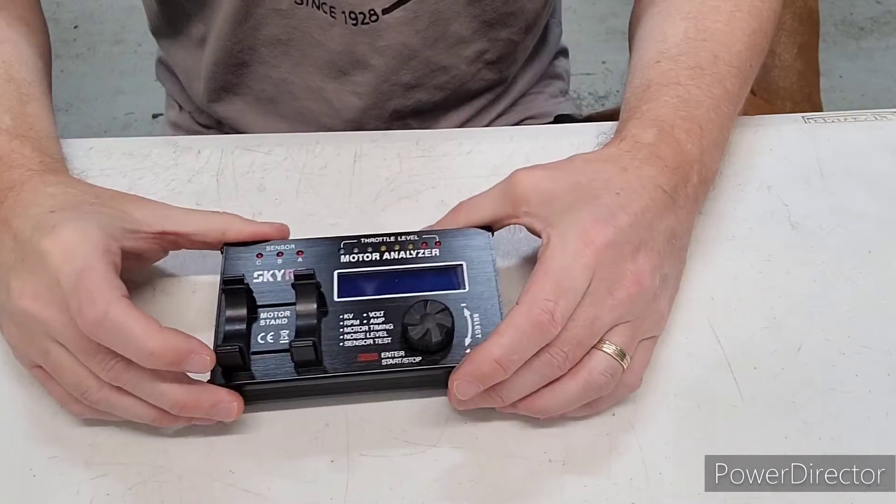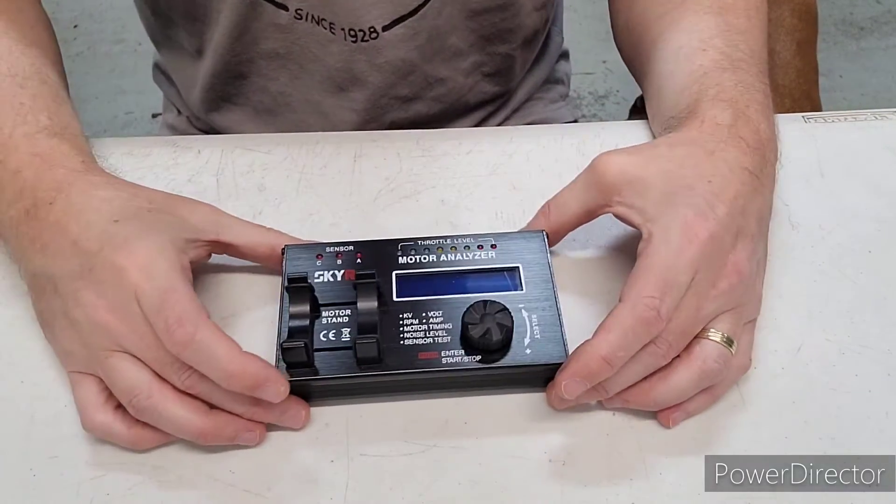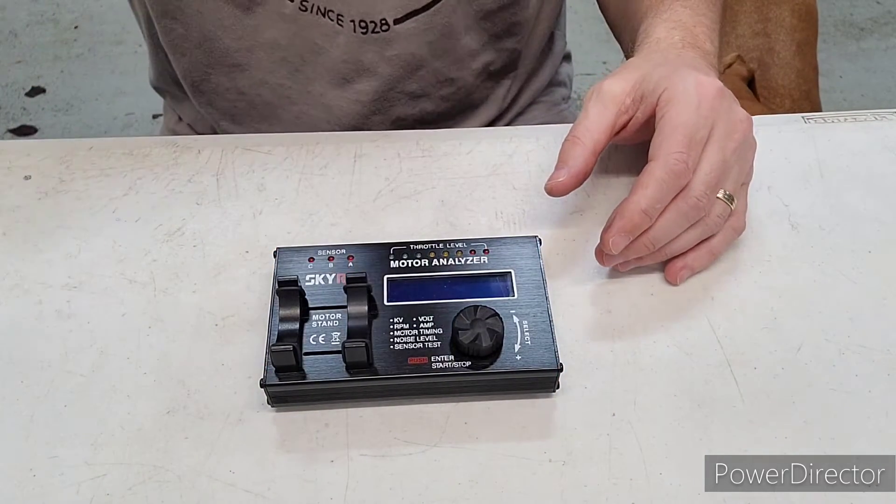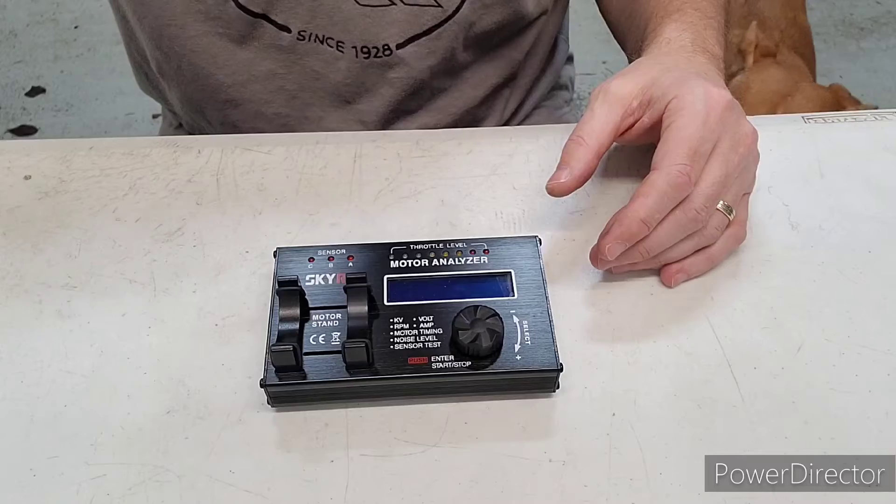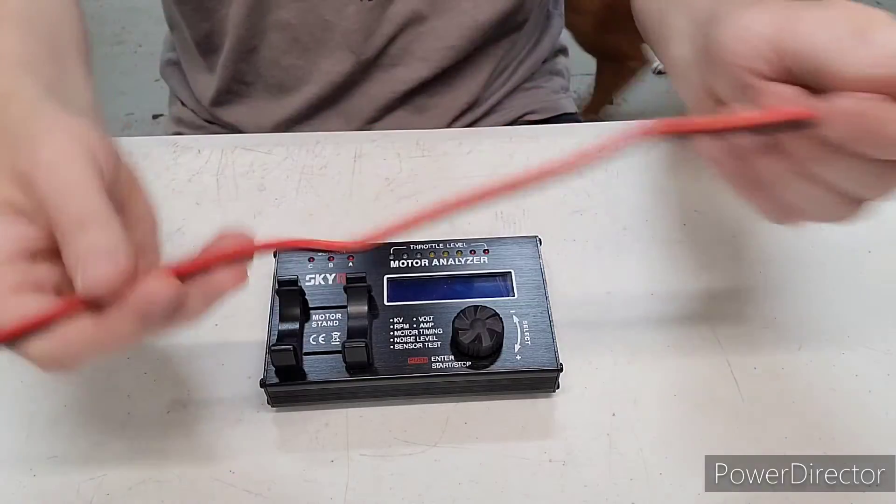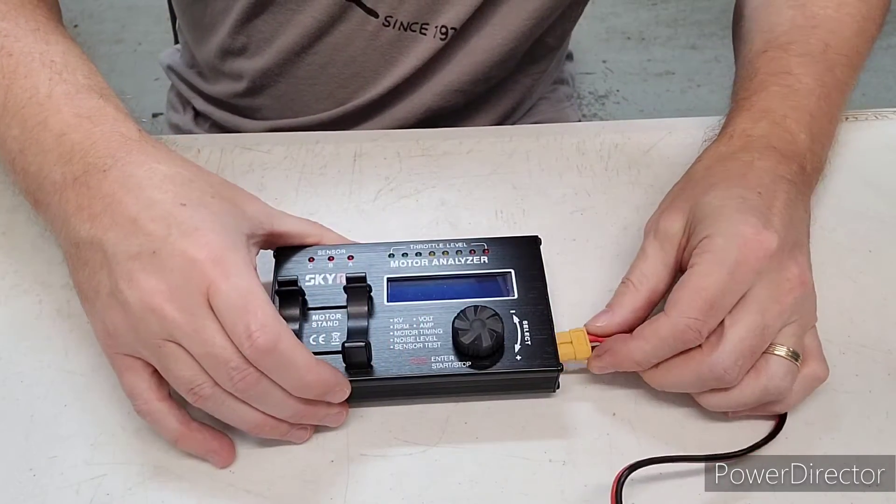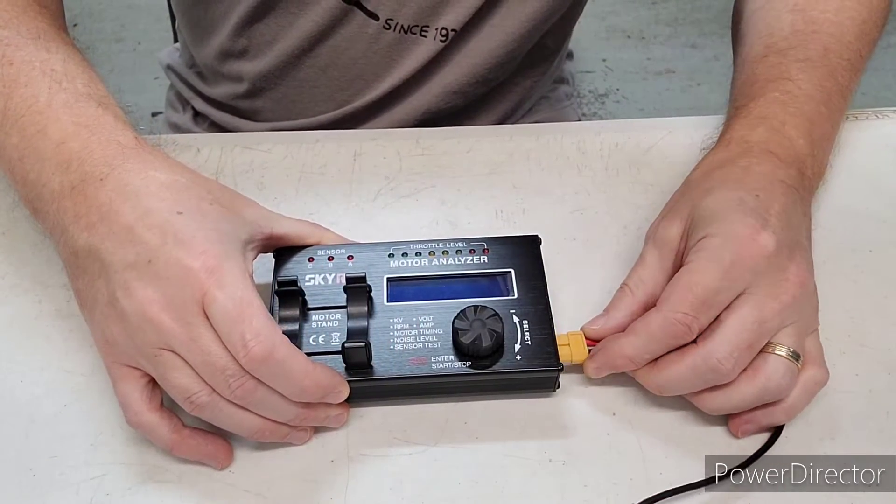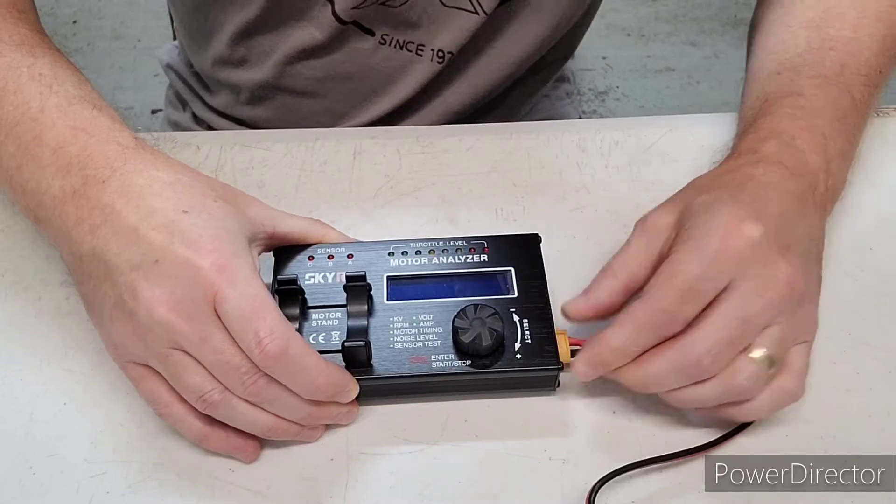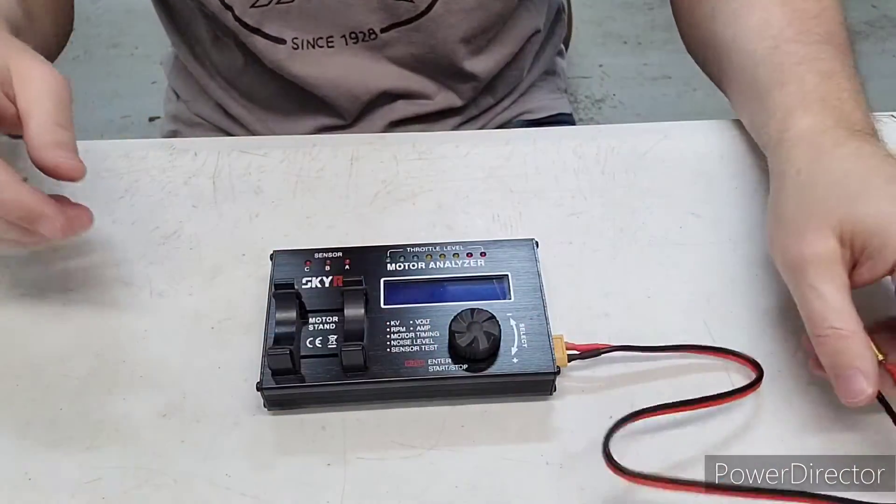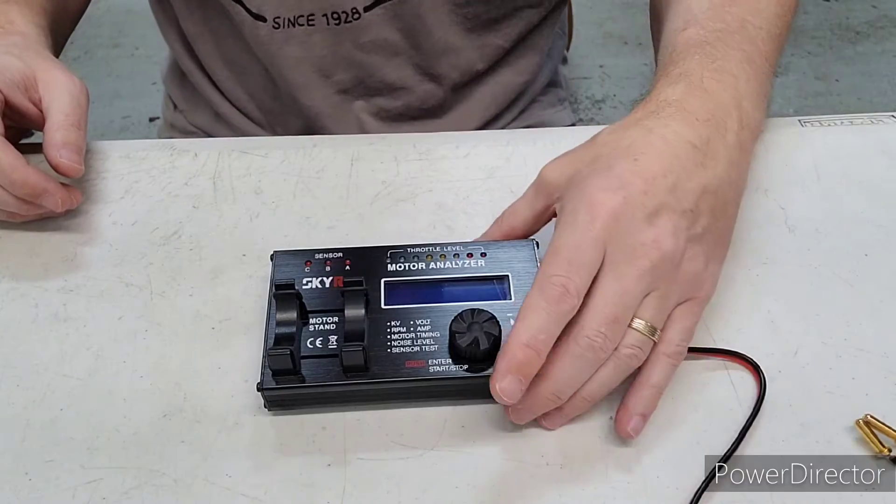So when you pull this motor analyzer out of the box, you have this unit here, and then you have the cable here, which is to plug in for power. And I had to modify mine because it comes default with four millimeter bullets. And so I soldered on fives because all my batteries use fives.